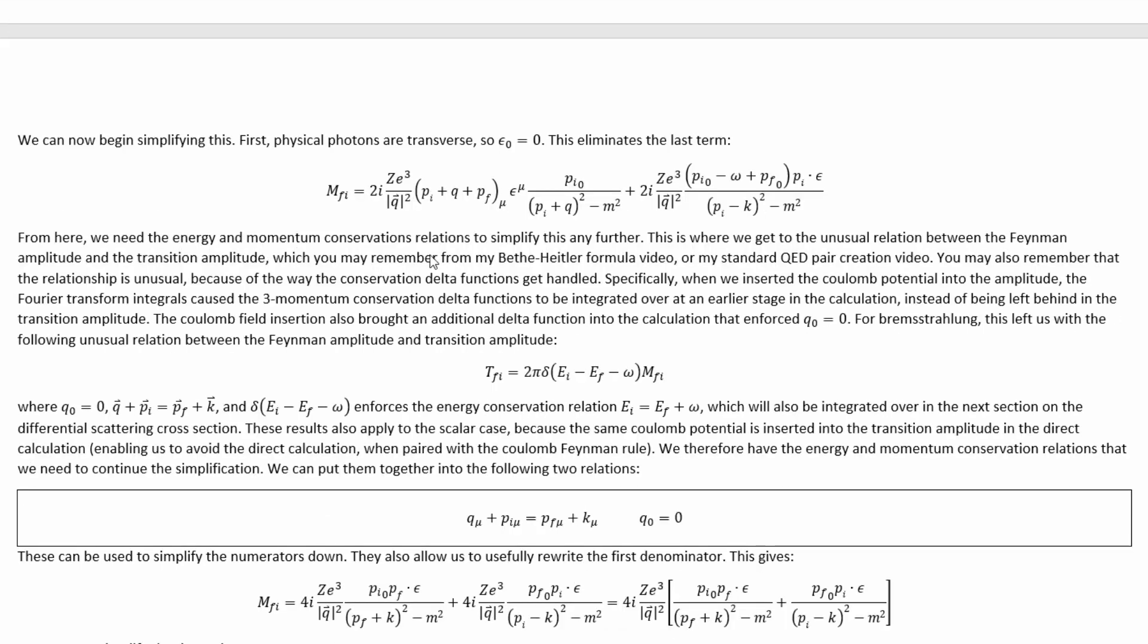From here, we need the energy and momentum conservation relations to simplify this any further. This is where we get to the unusual relationship between the Feynman amplitude and the transition amplitude, which you may remember from my beta-Heitler formula video or my standard QED pair creation video. You may also remember that the relationship is unusual because of the way the conservation delta functions get handled. Specifically, when we inserted the Coulomb potential into the transition amplitude,